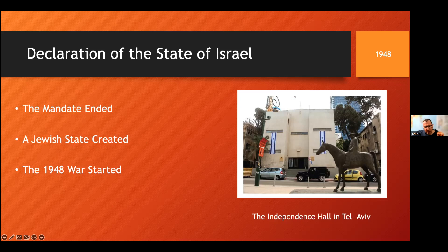It was the act of a nation fighting for its future — a declaration of independence. This whole ceremony was conducted in secret, and they chose this location for the declaration because the building was one of the most secure structures around, having small windows. As you see in the picture, this was the home of the mayor of Tel Aviv at that time.